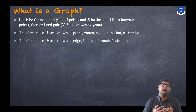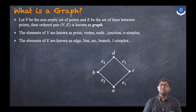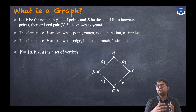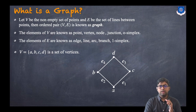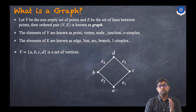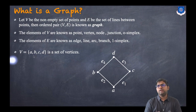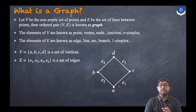The elements of E are known as edge, line, arc, branch, or one simplex. Now consider this graph. You can see the circular shapes — those are called vertices or nodes. The vertex set V equals {A, B, C, D}, so A, B, C, and D are the vertices. This whole set V is called the vertex set.